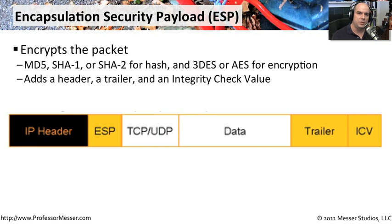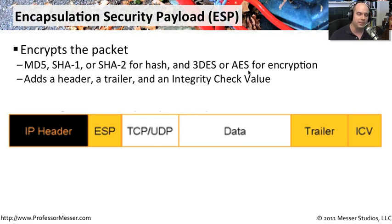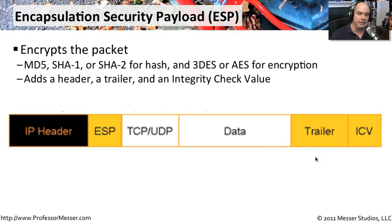The encryption piece in IPsec is provided by the second protocol — Encapsulation Security Payload — which provides both a hash and encryption of the data. Hashing is done with MD5, SHA1, or SHA2. The encryption part is usually done with Triple DES or AES. The ESP packet includes a header, a trailer, and an integrity check value. In the ESP packet you'll see your normal IP header, the ESP header, your TCP/UDP information and data, then the trailer and ICV. This encapsulates everything together — so not only is the data encrypted, but integrity checks confirm that you received it in exactly the form it was sent.